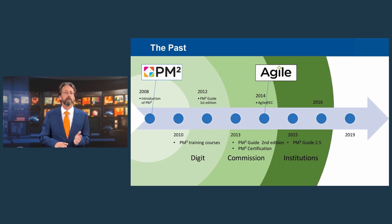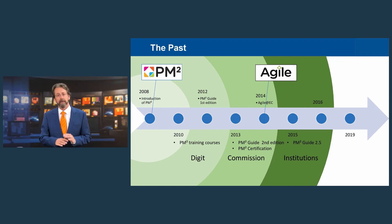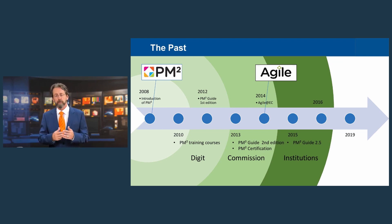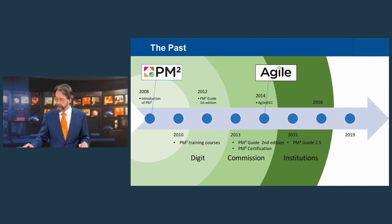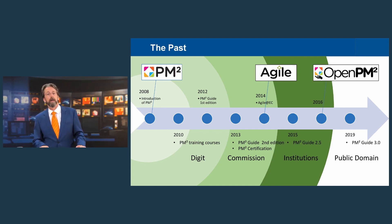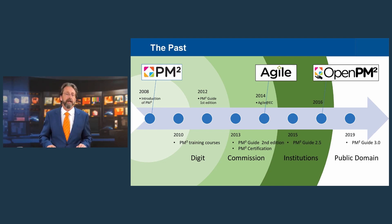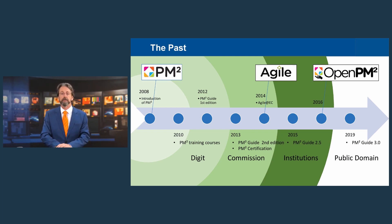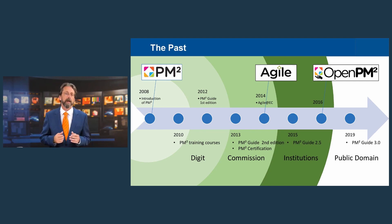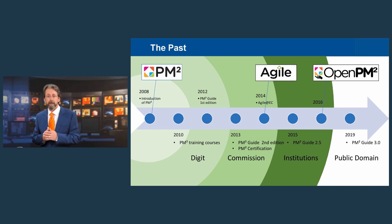In 2015, yet again, a new version of the PM2 guide — version 2.5 — was released, and we see the methodology being embraced outside the Commission by other institutions such as the European Central Bank. 2016 is a key moment in my opinion because it marked the release of an open version of PM2. Up to that point, PM2 was, you could say, the best-kept secret of the European Commission.